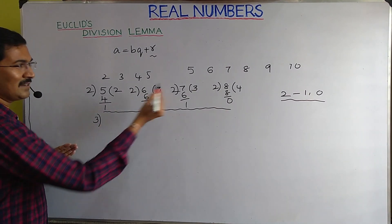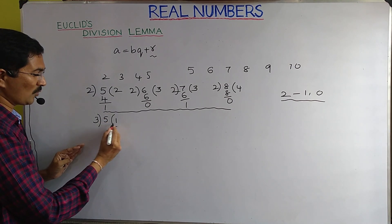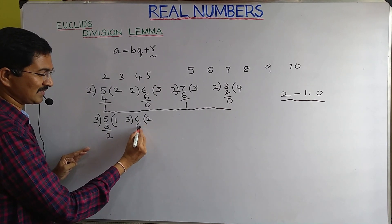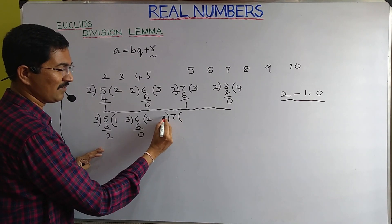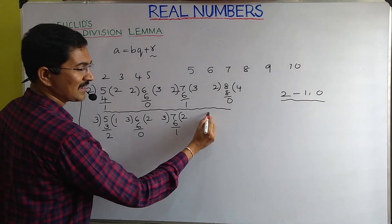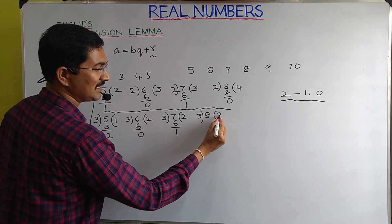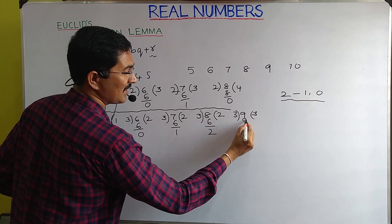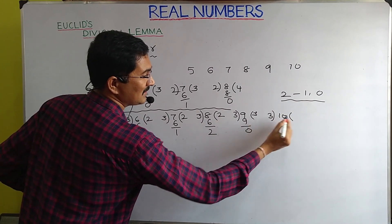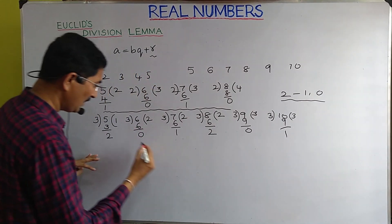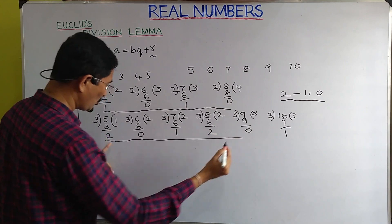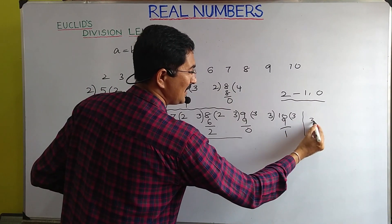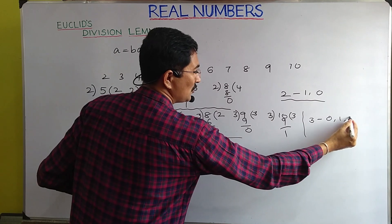Now dividing by 3: 5÷3 gives remainder 2; 6÷3 gives remainder 0; 7÷3 gives remainder 1; 8÷3 gives remainder 2; 9÷3 gives remainder 0; 10÷3 gives remainder 1. The remainders follow the pattern 2, 0, 1, 2, 0, 1 — so when dividing by 3, you get remainders 0, 1, or 2.